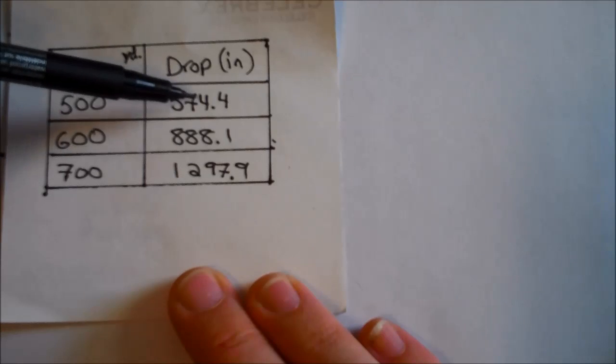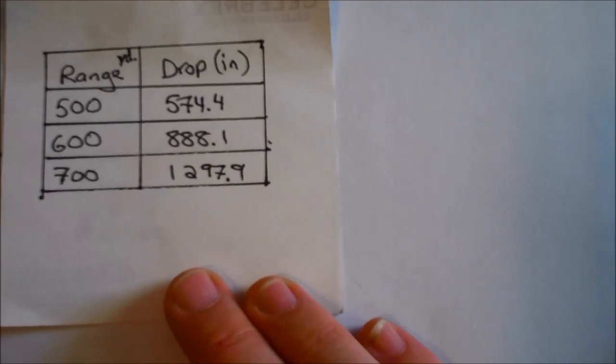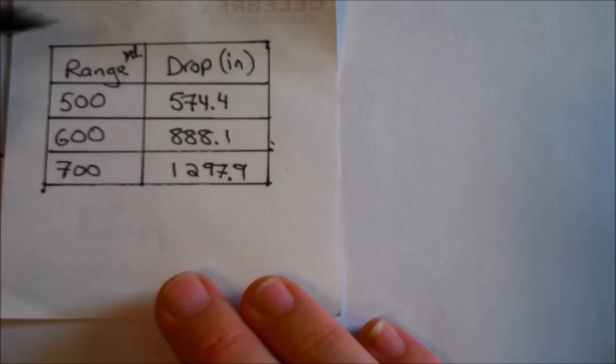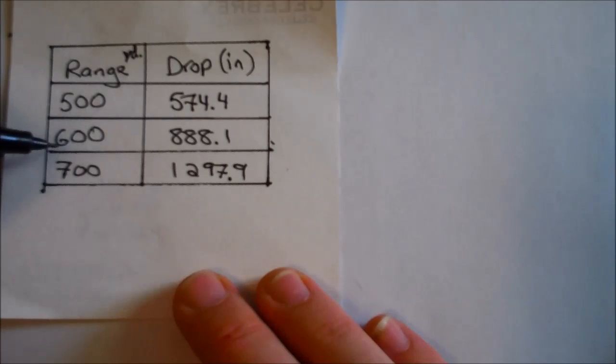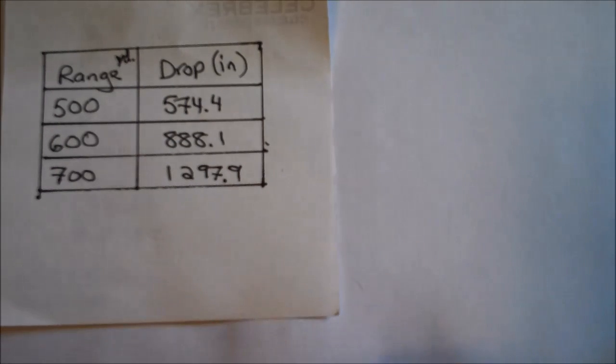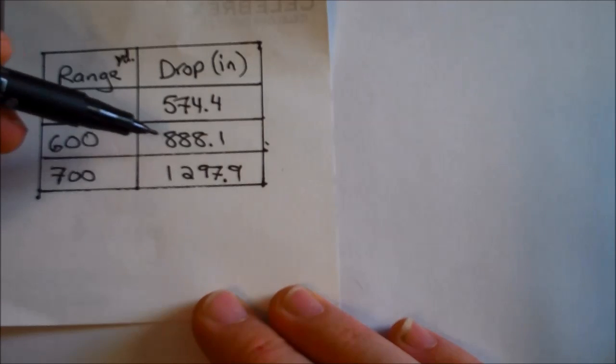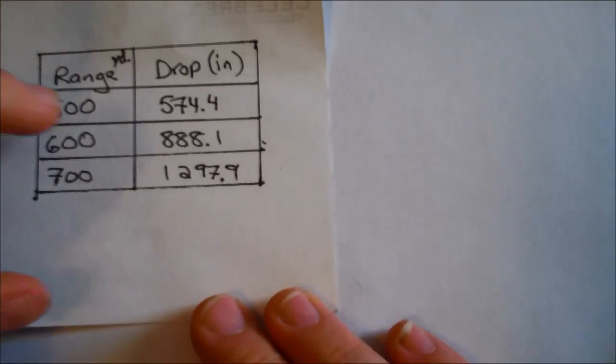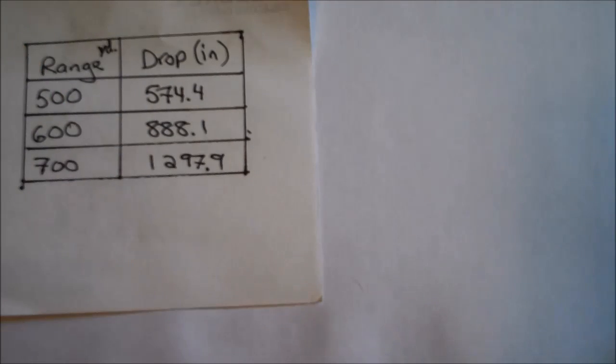At 500, the drop is 574.4 inches from the bore line. And then we're going to use in particular 600, since that's what my previous video was of. And the drop for that was 888 inches. So now comes the important part, setting up the scope to account for 888 inches of drop. And here I'll show you how we're going to do that.